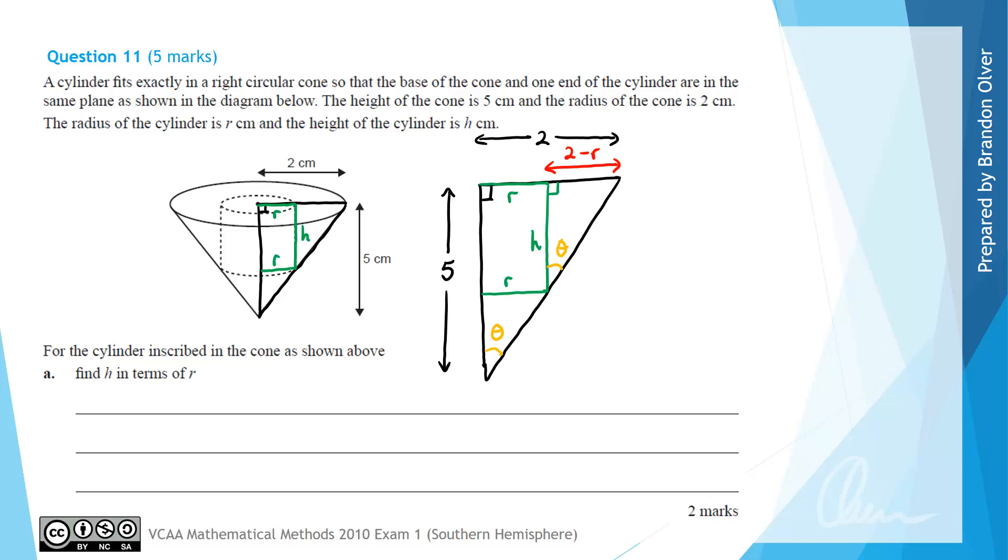Now because we're dealing with similar triangles we can use ratios. So we can make the statement that 5 divided by 2, which is the height of the cone divided by the radius of the cone, is going to equal another ratio. If we look at what's in corresponding positions, the height here of 5 is in the same position on the big triangle as the h value is on the little triangle. So we can write this as h divided by—and the 2 in the big triangle is in the same position as the 2 subtract r in the smaller triangle. So that means that those two ratios are equal.